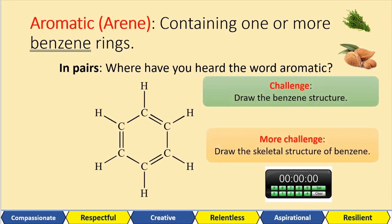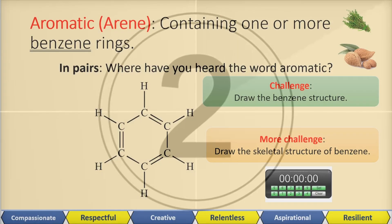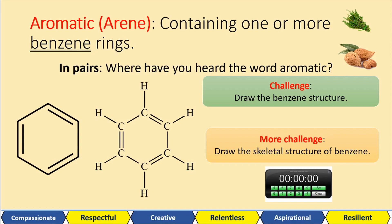I've got some challenge questions here. The first one's asking you to draw the benzene structure and the next one's asking you to draw the skeletal structure of benzene. So pause the video and have a go at that. With the skeletal structure, each kink represents a carbon and we don't show the hydrogens, because most organic compounds are hydrocarbons. So to save time, we don't draw the carbons — we just have a kink — and we don't draw the hydrogens. We assume there's a hydrogen there.